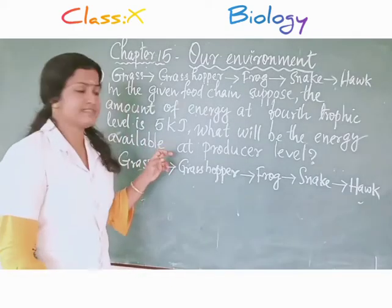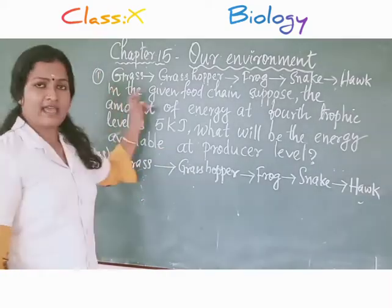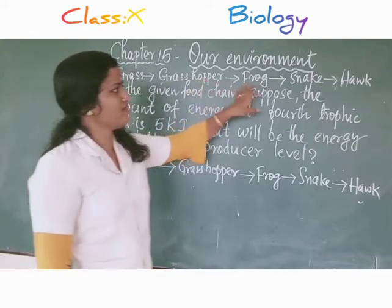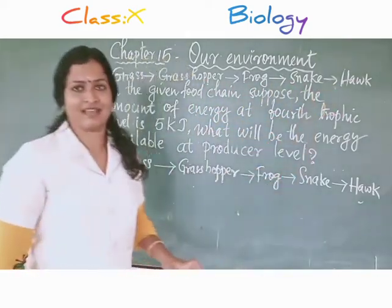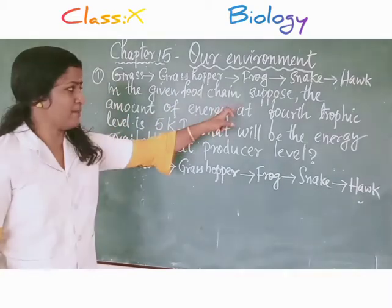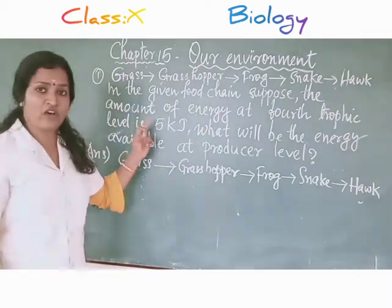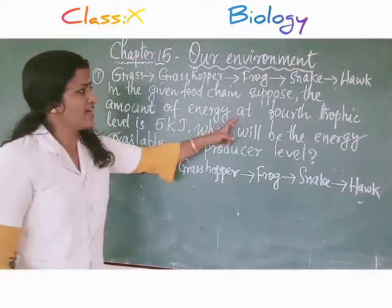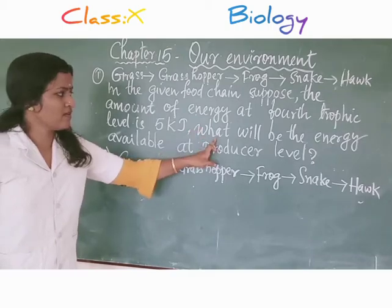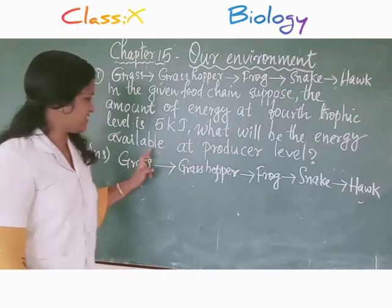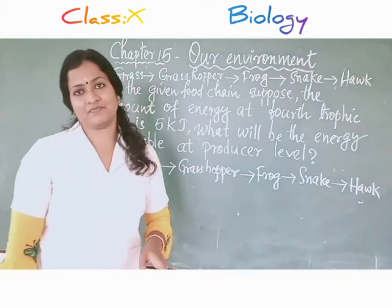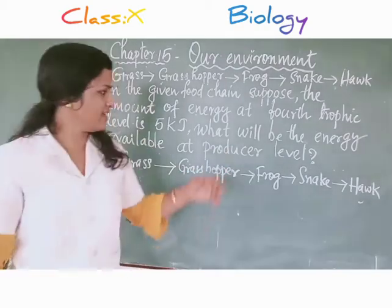First question: a food chain is given — grass, grasshopper, frog, snake, hawk. The question is: in the given food chain, suppose the amount of energy at the 4th trophic level is 5 kilojoules. Then what will be the energy available at the producer level? How can we get the answer?